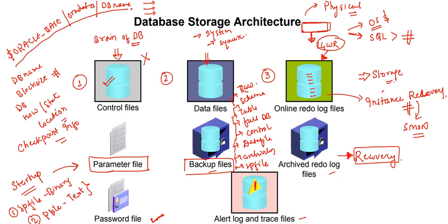Apart from that, we have the password file. I will mention its location in a separate session when we discuss parameter files. The importance of the password file is that whenever you log into the database as SYSDBA, SYSASM, or SYSOPER — these super user roles — a password file is required, especially when logging in remotely. For example, if you are in India logging into a database server in the UK via SSH, the password file must be present. You can even create a password file manually from the OS prompt, which we will discuss in later sections.